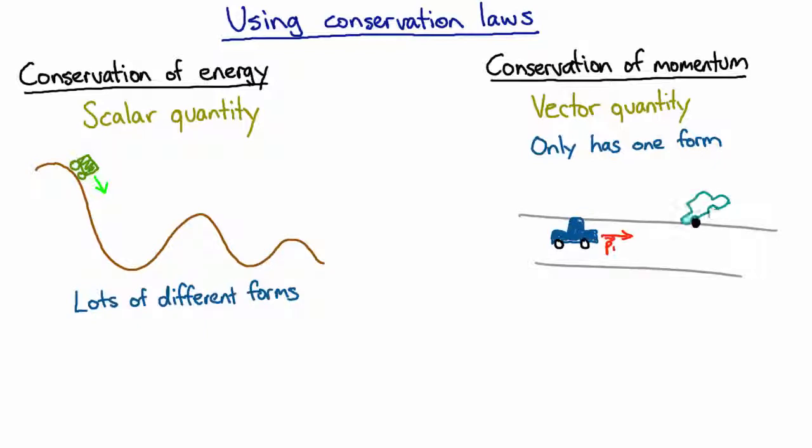after the collision, no matter how mushed up the cars are and no matter how many directions the pieces are going, we can still use conservation of momentum because there's only one form of momentum.